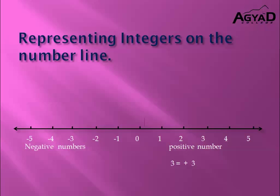Also, another note: for negative numbers, you must put the negative sign in front of the number. For positive numbers, you can write the number alone — for example, just 3 — or you can put a positive sign in front of it.